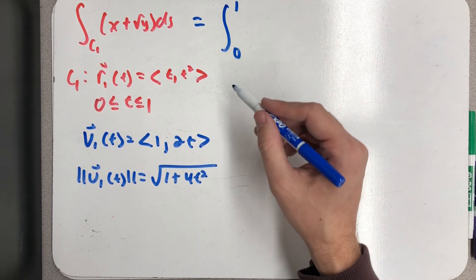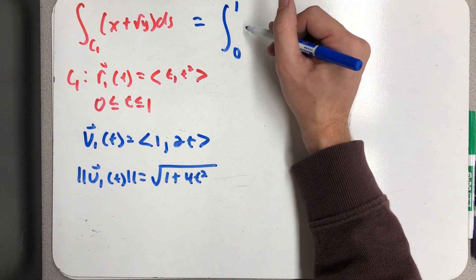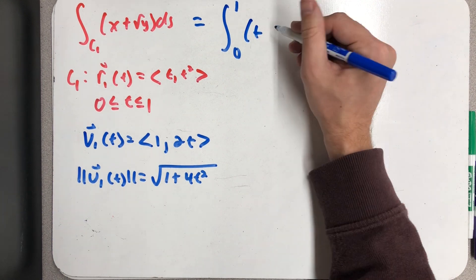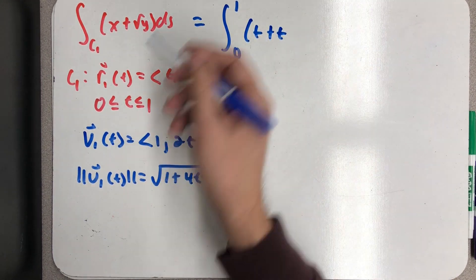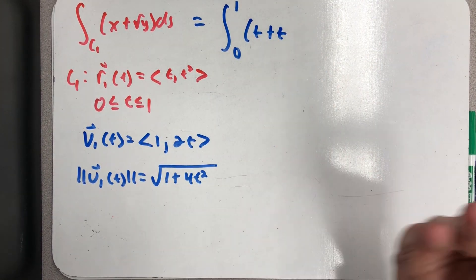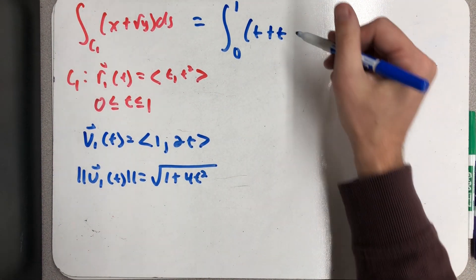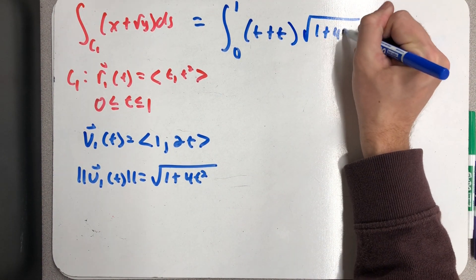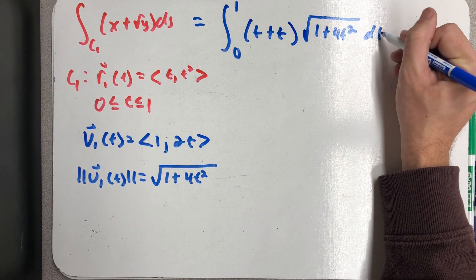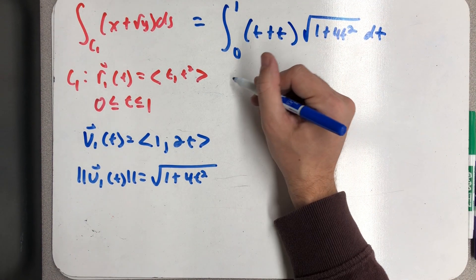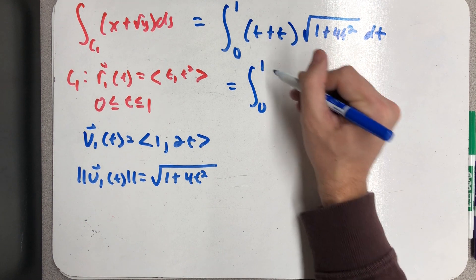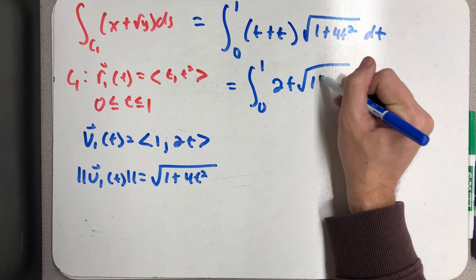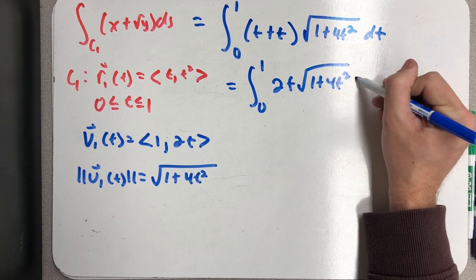So I have my speed function, and I'm ready to rewrite this in terms of the variable t. So x plus root y. Well, let's see, that's going to be t plus, well, absolute value of t, but I know t is positive, or at least bigger than zero, times the square root of 1 + 4t². So the integral from zero to one of 2t√(1 + 4t²) dt.